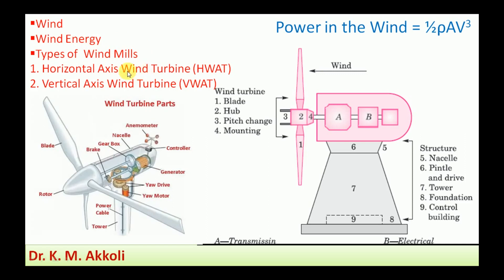Windmills and wind turbines are classified mainly into two types: the Horizontal Axis Wind Turbine (HAWT) and the Vertical Axis Wind Turbine (VAWT). For discussing the working of a wind turbine, we will use the horizontal axis wind turbine as the common reference. The vertical axis type will be discussed in later sessions.